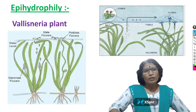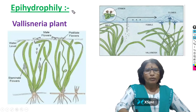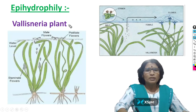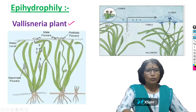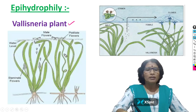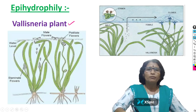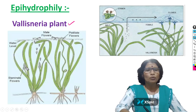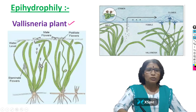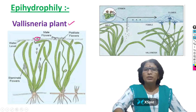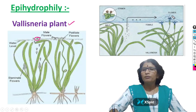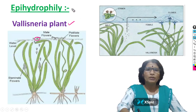Now, coming to water plants, hydrophily is of two types: epihydrophily and hypohydrophily. Epihydrophily means pollination takes place above the water surface. The best example is the Vallisneria plant, which is growing in water. In Vallisneria, there are two types of plants: the female plant produces only female flowers, and the male plant produces only male flowers. Due to the presence of a lengthy stalk, the female flower reaches the water surface. The male flowers gradually detach from the inflorescence, reach the water surface, move passively by water currents, and reach the female flower. In this way, pollination takes place above the water surface — that is why we call it epihydrophily.